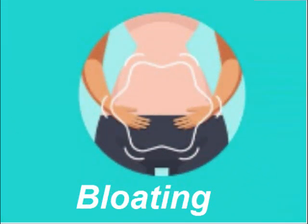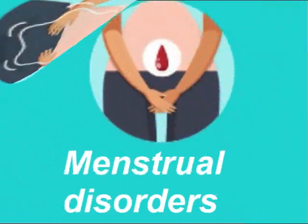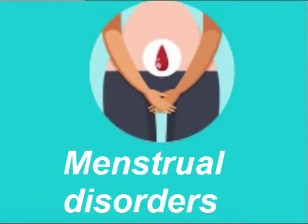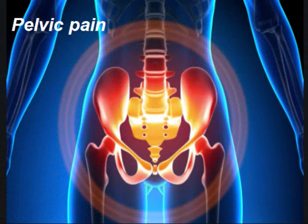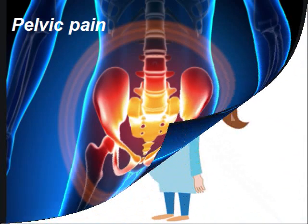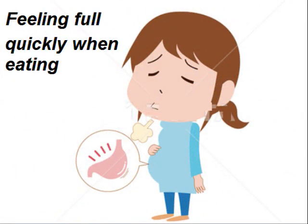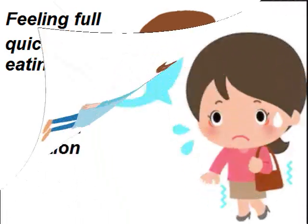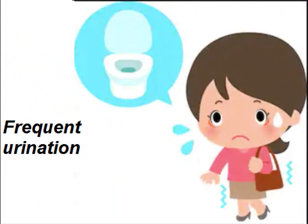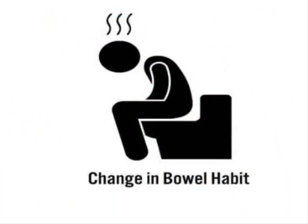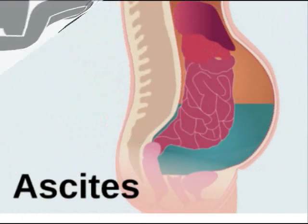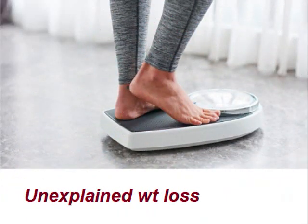The symptoms are vague, like bloating, menstrual disorders, pelvic pain, feeling full quickly when eating, frequent urination, change in bowel habit, ascites — that is collection of fluid in the abdomen — and unexplained weight loss.